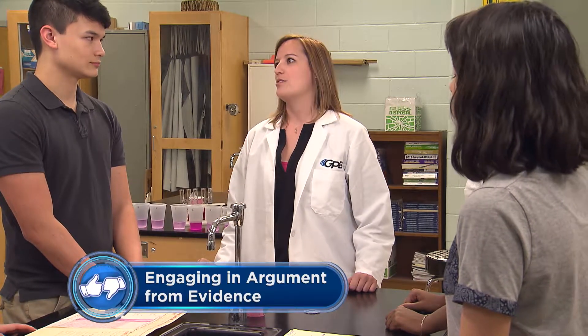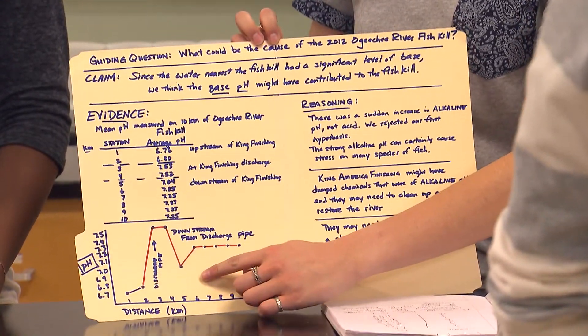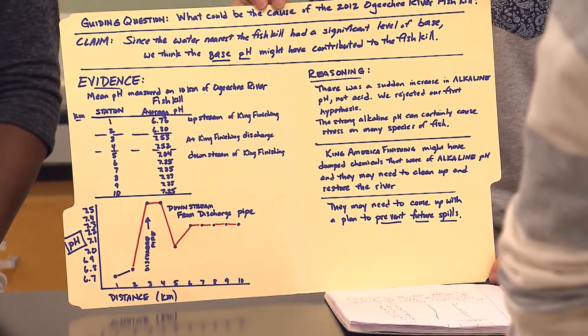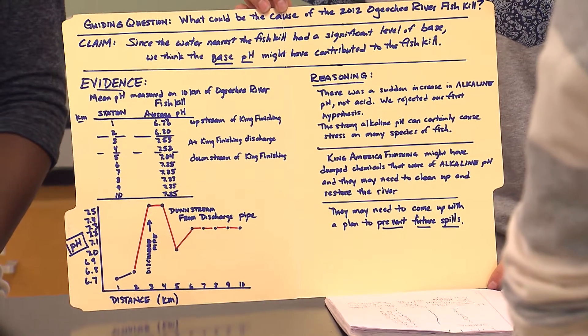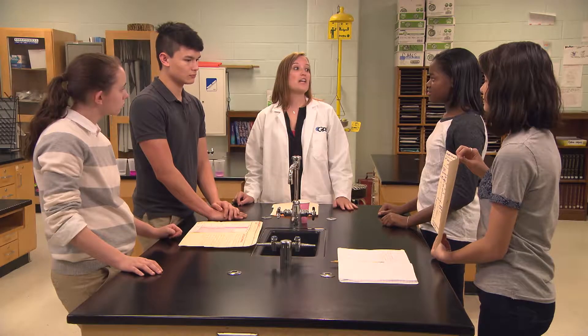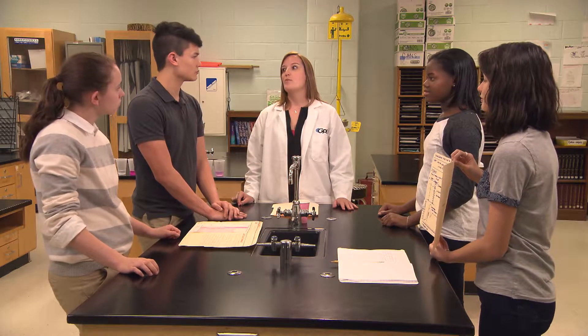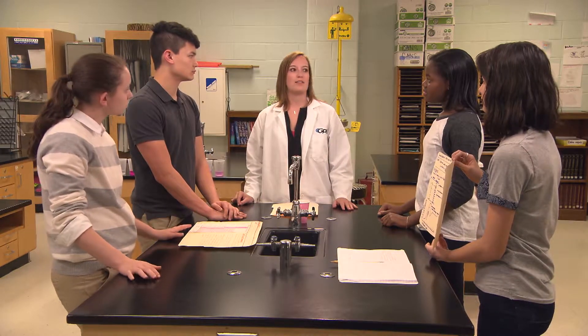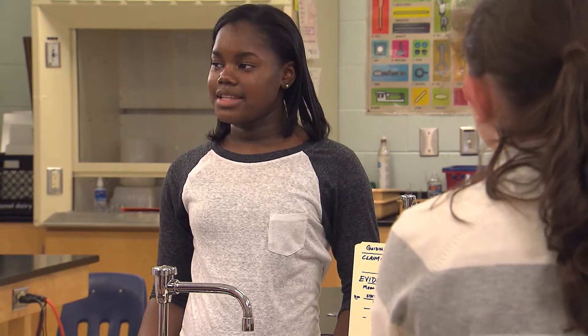Each team will present their display boards. Team one can go first. Our claim was that it was a base that caused the fish kill. The evidence shows that the area where the fish were killed became alkaline, not acid. So we've rejected our first hypothesis. Yes, rejecting your first hypothesis is fine. Remember that science is a constantly self-correcting process — we reject ideas if there's no evidence to support them. We reasoned that the King America Finishing Company might be a responsible party and may have to clean up and restore the river, and they may need to come up with a plan to prevent future spills.